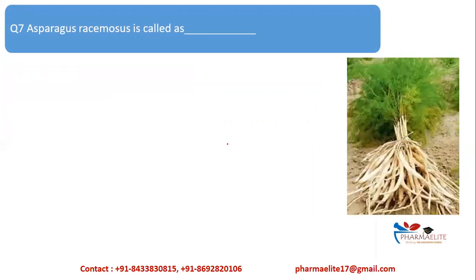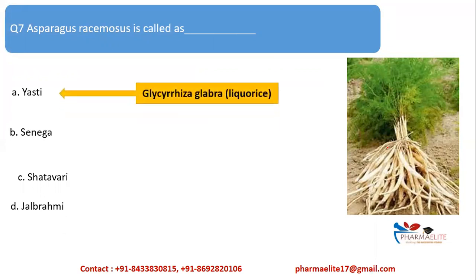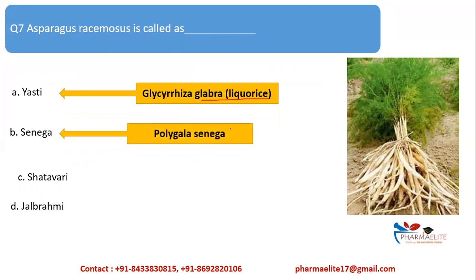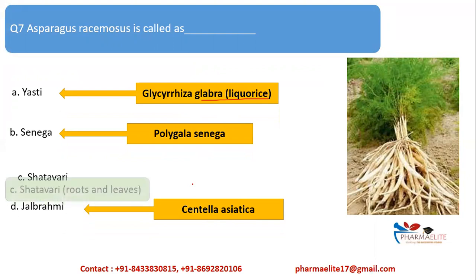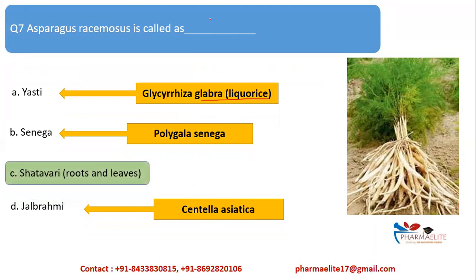Next question: Asparagus racemosus is also called dash. This is the picture of Asparagus racemosus — what is its other name? Options are Yashti, Senega, Shatavari, and Jala Brahmi. Yashti is a synonym for Glycyrrhiza glabra (liquorice). Senega is Polygala senega. Jala Brahmi is Centella asiatica. Shatavari's source is Asparagus racemosus — the roots and leaves of it. So the correct answer is option C: Shatavari.